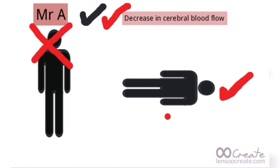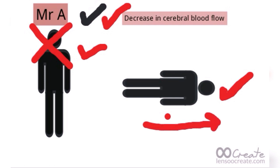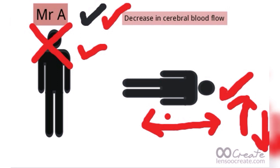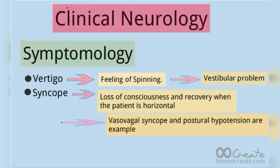Mr. A is in a standing position, so due to sudden syncope the blood flow from the brain decreases due to gravitational force. But as soon as he lies flat, he regains consciousness. That's why the patient of syncope regains consciousness when lying in a horizontal plane — because in the horizontal plane blood flow to the brain increases, while in the vertical plane it decreases due to gravitational force.